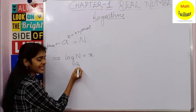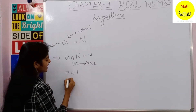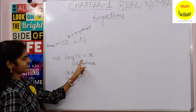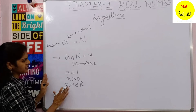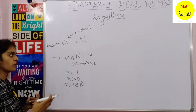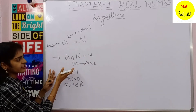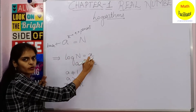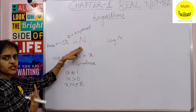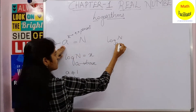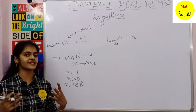Here, the same base a appears in the logarithm — it is log to the base a. The condition is that a should not be equal to 1, and a should be greater than 0. x and n can belong to real numbers. So every exponent of the form a power x equals n can be expressed in logarithmic form as: log n to the base a is equal to x. This is the basic definition of logarithm.